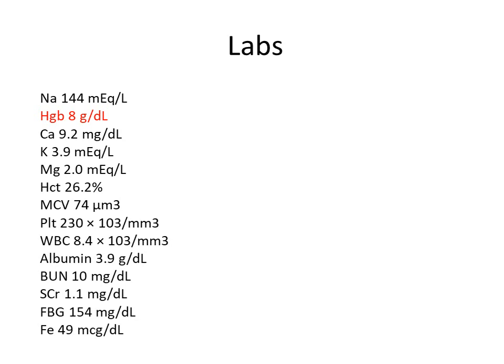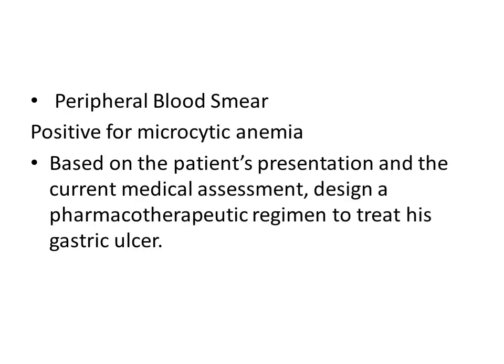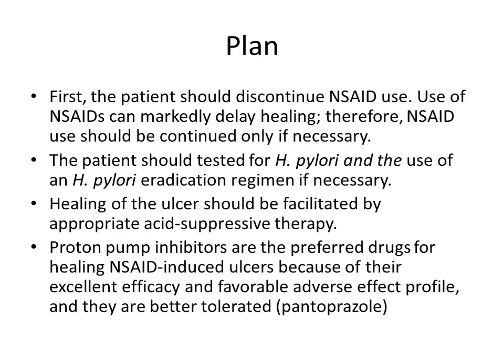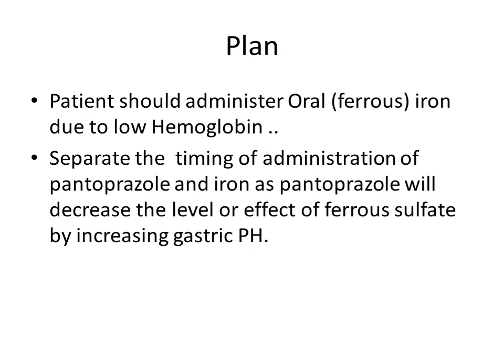He has a hemoglobin of 8 grams per deciliter indicating anemia. We are going to use a blood smear because he has microcytic anemia and we want to evaluate the gastric ulcer. He is using NSAIDs for osteoarthritis, so we need to discontinue the NSAID. We need to test for H. pylori to ensure there is none. We need to use a proton pump inhibitor for the NSAID-induced ulcer — pantoprazole is the most effective option. We also need to use oral ferrous iron. When using oral iron with pantoprazole, we need to use timing or separation so that they do not interfere with each other, since pantoprazole reduces stomach acidity and affects iron absorption.